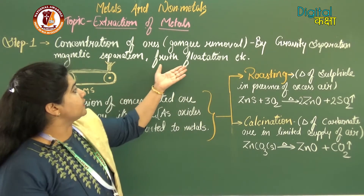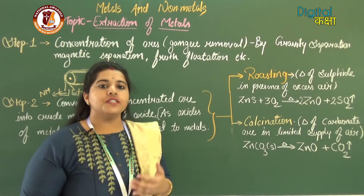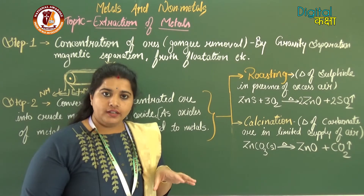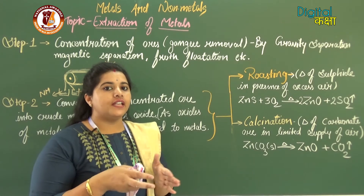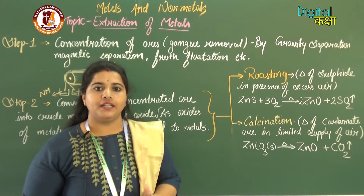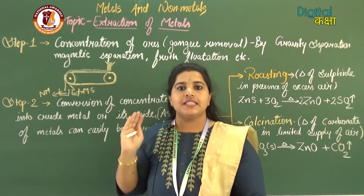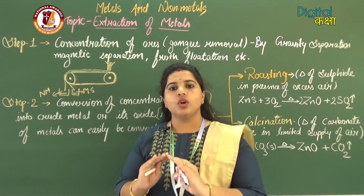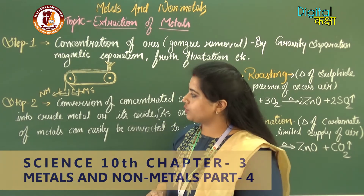After this there is the froth flotation process, used for the concentration of sulfide ore — covered in 11th class. Since sulfide ore is lighter, it is mixed with oil in a container and froth is generated by spinning wheels. The froth containing sulfide rises and is collected separately, while sand particles remain suspended. After concentration, we obtain the concentrated ore with high metal content.